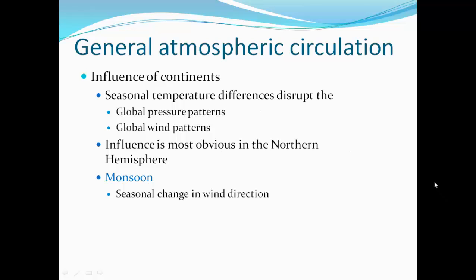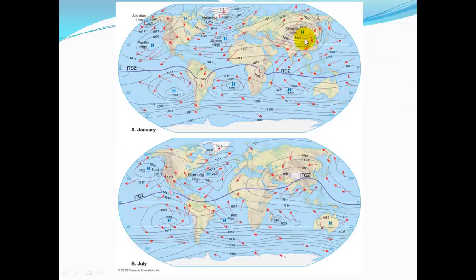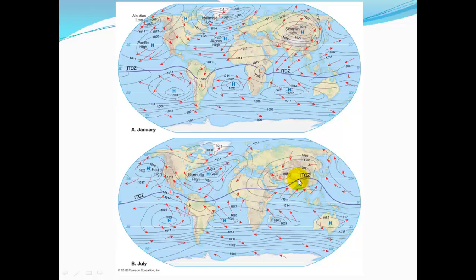The monsoon is a seasonal change in wind direction. In winter, a lot of air moves off the continents over Asia across India — this is very dry air, so there's no monsoonal rain. But in the summer, warm moist air comes off the ocean and hits the landmass, dropping its precipitation on India. That's why there are such vast monsoons in that area.